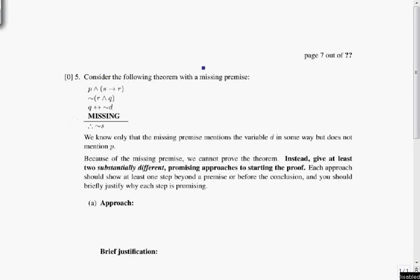Consider the following theorem with a missing premise. So we've got some premises, three of them here. P and s implies r, not r and q, and q if and only if not d. And then we've got a missing premise.